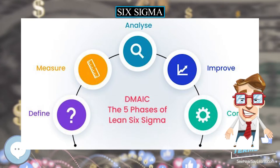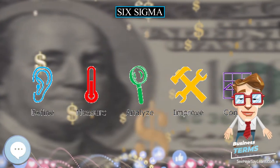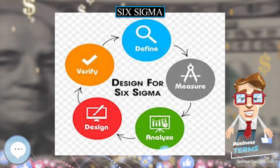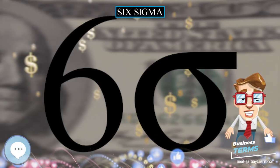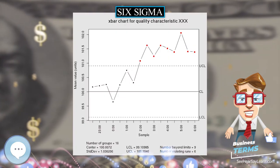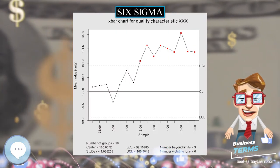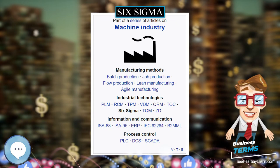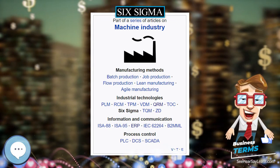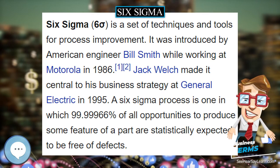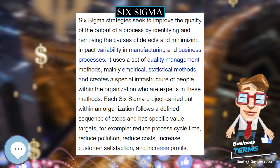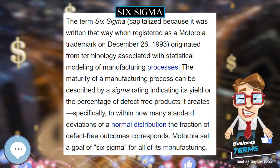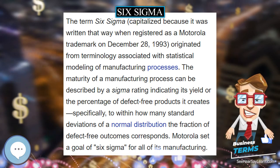One key innovation of Six Sigma involves the absolute professionalizing of quality management functions. Prior to Six Sigma, quality management was largely relegated to the production floor and to statisticians in a separate quality department. Formal Six Sigma programs adopt a kind of elite ranking terminology, similar to some martial arts systems like Judo, to define a hierarchy and special career path that includes all business functions and levels. Six Sigma identifies several key roles for its successful implementation, and special training is needed for all practitioners.